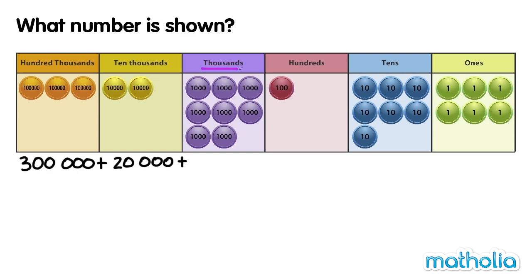In the 1,000s place, there are eight counters. They have a value of 8,000. In the 100s place, there is one counter. It has a value of 100.